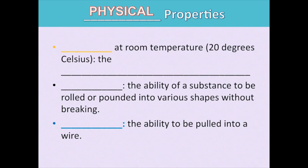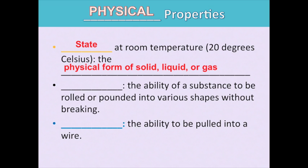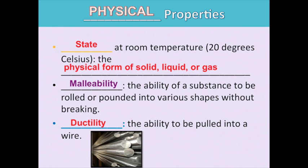Here are physical properties. For example, we have state at room temperature — room temperature is 20 degrees Celsius. Is the object a solid, liquid, or gas? That's the state it is. Malleability refers to the ability of a substance to be rolled or pounded into various shapes without breaking. And ductility refers to the ability to be pulled into a wire. Metals are famous for being very malleable and ductile.